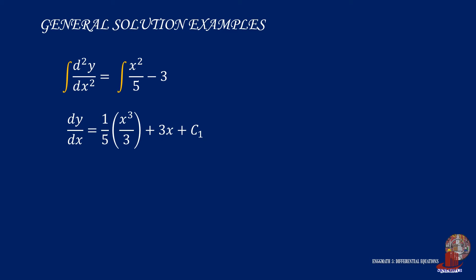On the right side, the denominator 5 is extracted as one-fifth, and the integral of x squared is x cubed over 3. The constant 3 is then integrated as 3x. Don't forget to add the first arbitrary constant c1.